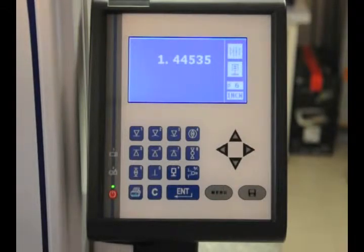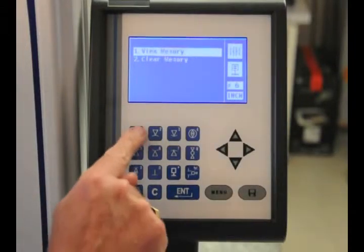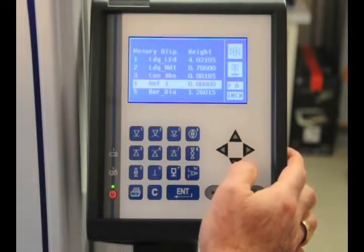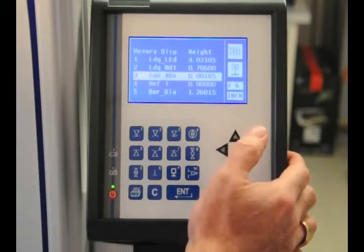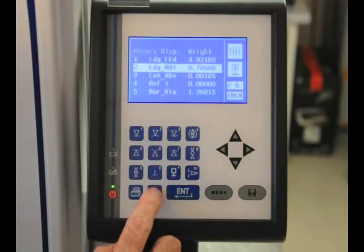Now that we've taken some measurements, we do have this memory feature. If I hit this key, it brings up a couple selections. We can view the memory or clear the memory. We're going to view the memory here. This will show us all the measurements that we've taken over this period of time. I can select a few of these measurements.